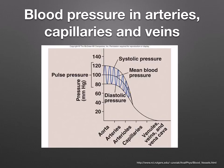As blood moves further from the heart, its overall pressure decreases. This is important to prevent the bursting of the capillaries, which are only one cell thick. The decrease in pressure continues in the capillaries, so that by the time the blood reaches the venules and veins, it has fallen to almost zero, as you can see in this graph. The return of blood back to the heart is thus dependent on the body muscles squeezing the veins and the valves in the veins preventing the backflow of blood.